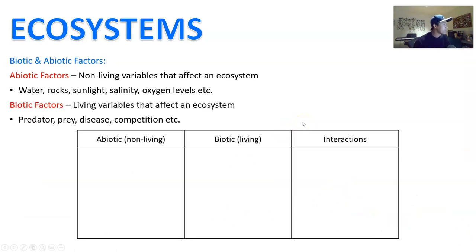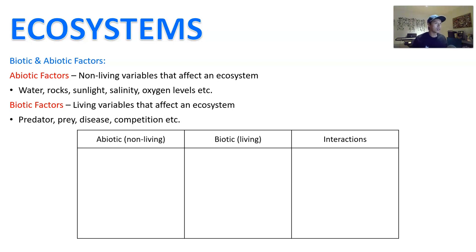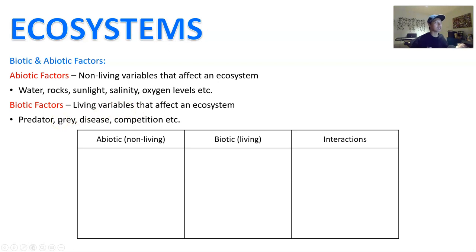When we talk about ecosystems, we also need to consider biotic and abiotic factors — the living and non-living variables that are going to affect our organisms, similar to biotic and abiotic limiting factors. Things like water, rock, sunlight, salinity, and oxygen levels are all abiotic factors, whereas living components include things like predator, prey, disease, competition, and so forth.